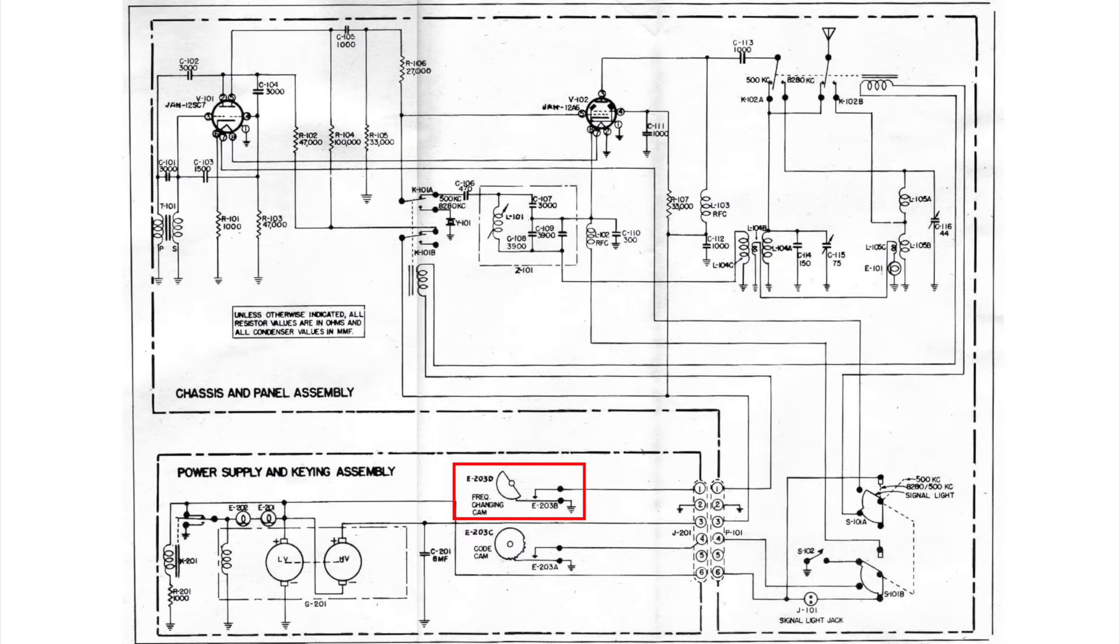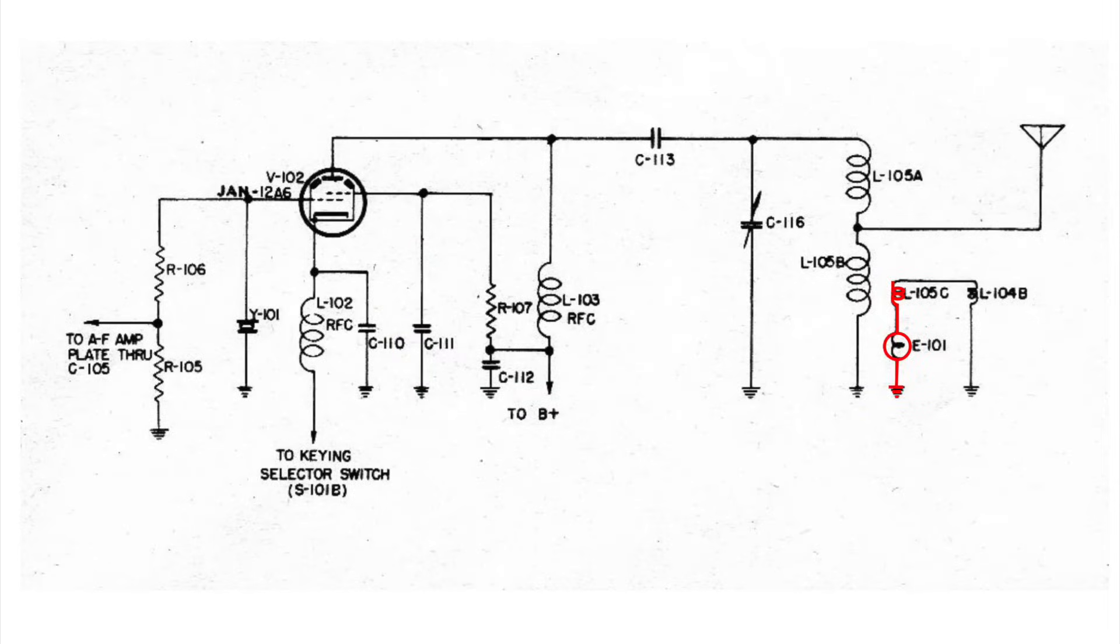When the frequency switching cam switches transmission to the higher frequency, relay K101A disconnects the 500 kHz tuning circuit from the antenna and connects crystal oscillator Y101, while relay K101B disconnects the B plus supply from V101, disabling the audio oscillator, and switches V102's tank circuits to alternate components more suited to the higher frequency. Indicator lamp 101 is now driven by coil L105C, which is inductively coupled to the higher frequency tank circuit.